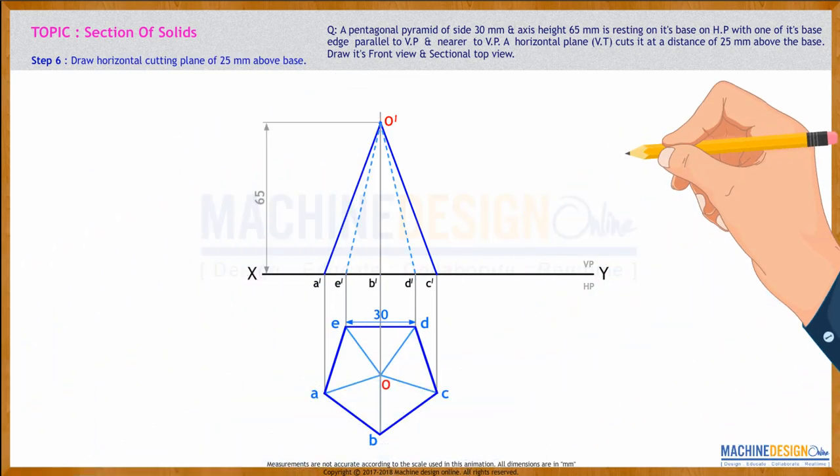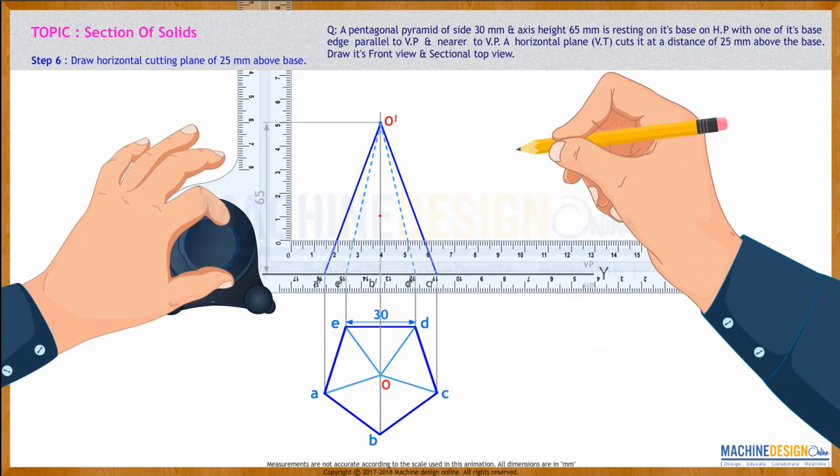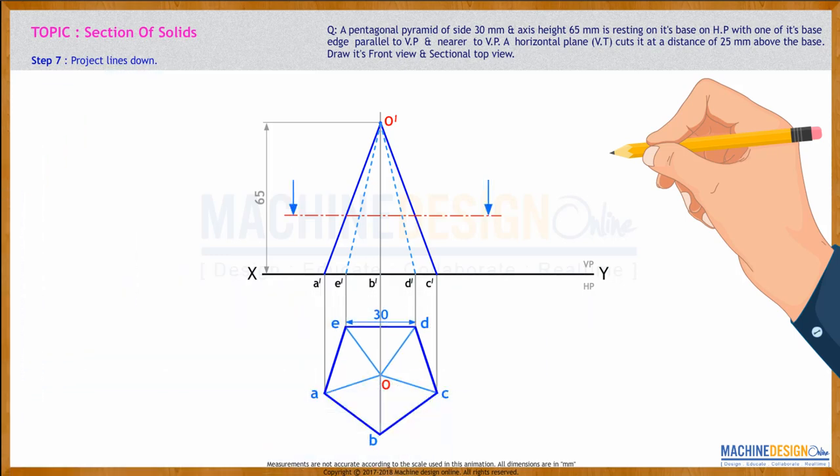Now, they have set a horizontal plane which is 25mm above the base. From here, we'll go up by 25mm and draw the cutting plane line. This portion is dark. Now, how many points did we get?